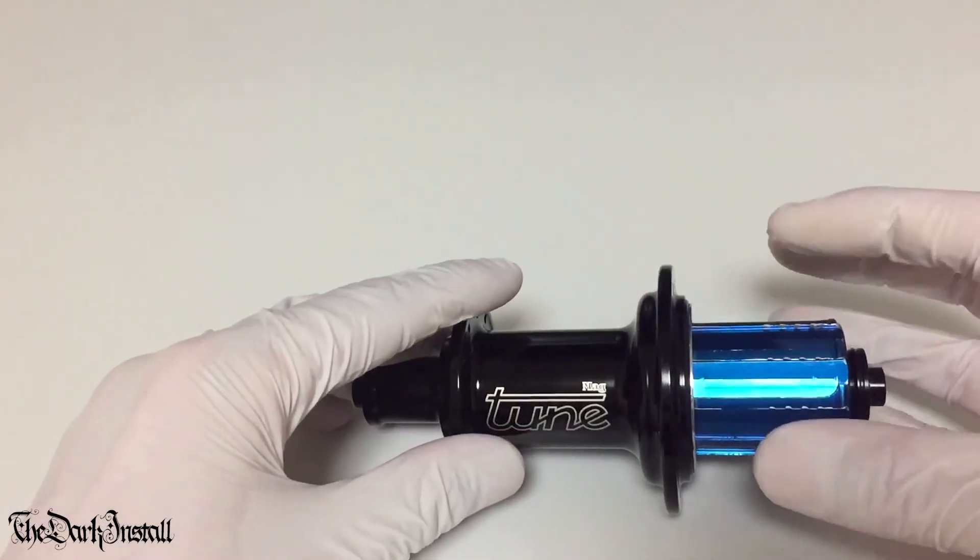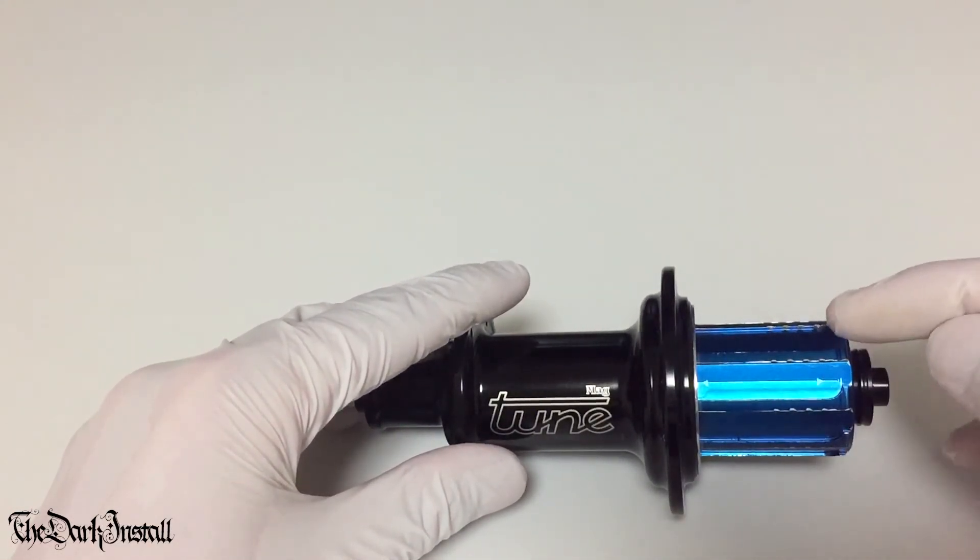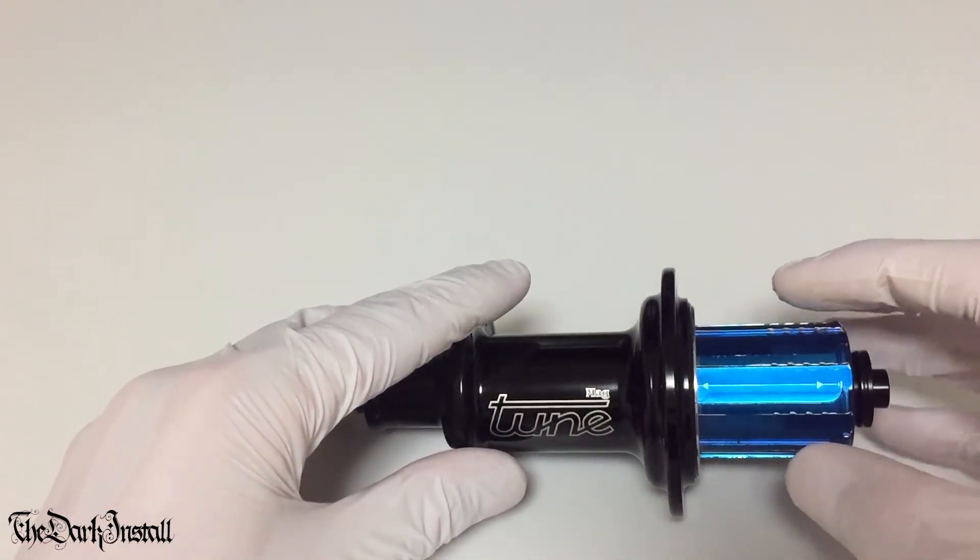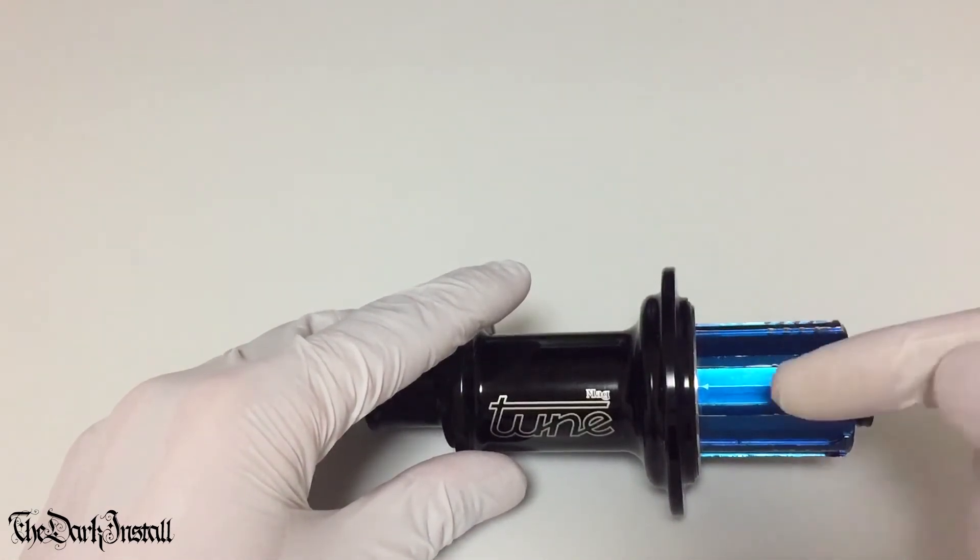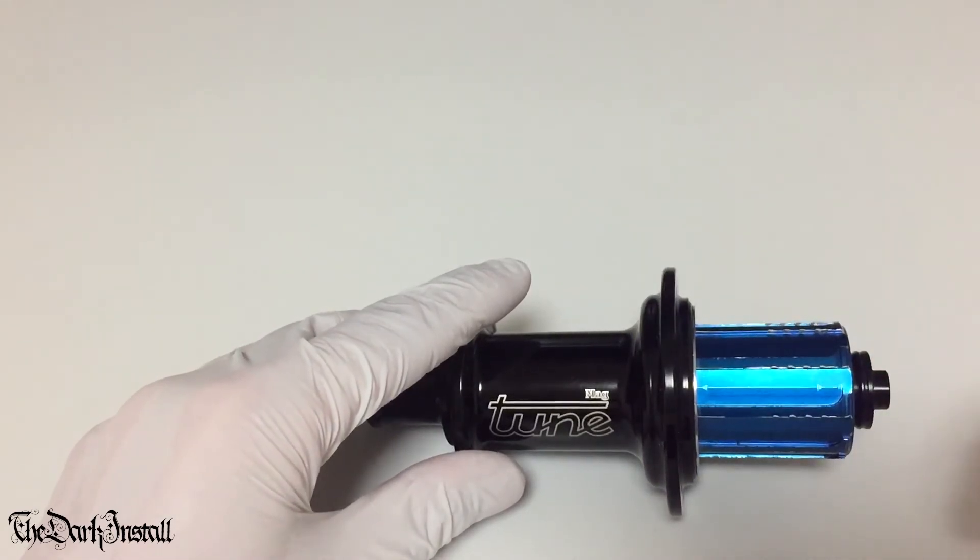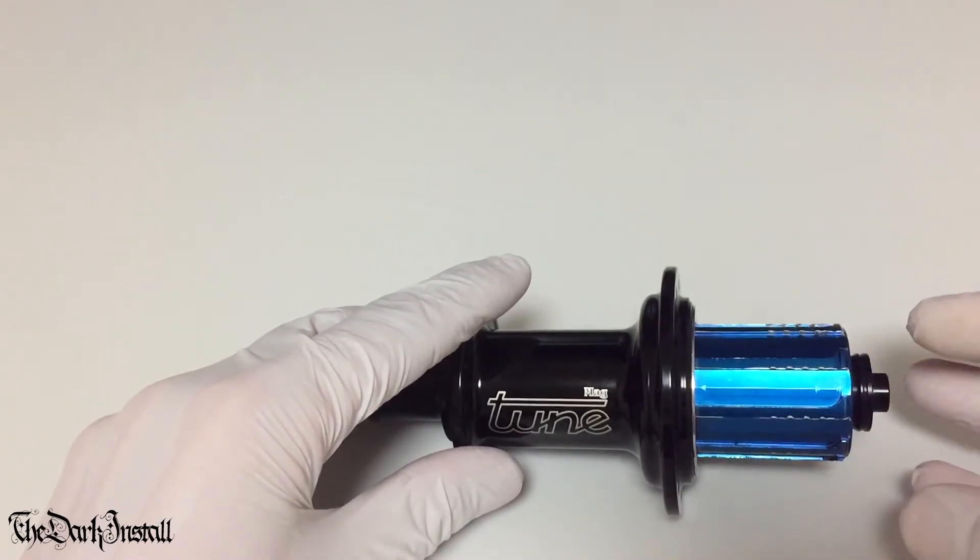Then we're going to drive the axle through from this side so it'll extend out this side. We're going to wiggle off the free body, clean it all up inside, take the pawls off the free body, take the springs off the free body, clean out the ratchet.